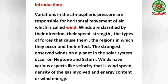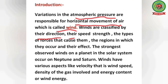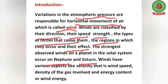Variations in the atmospheric pressure are responsible for the horizontal movement of air, which is called wind. Winds are classified by their direction, speed, strength, types of forces that cause them, the regions in which they occur, and their effect. The strongest observed winds on a planet in the solar system occur on Neptune and Saturn. Winds have various aspects like velocity (wind speed), density of gases involved, and energy content or wind energy.